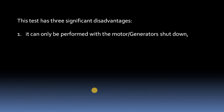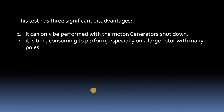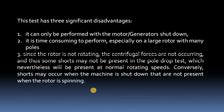One disadvantage is it can only be performed when the motor or generator is in idle condition — at rest. It is also time-consuming to perform, especially on large rotors with many poles. Furthermore, since the rotor is not rotating, centrifugal forces are not accounted for. Some shorted turns in the field poles only exist when there is rotation due to centrifugal forces, and those cannot be identified by the pole drop test.